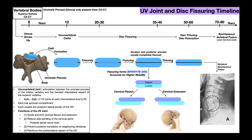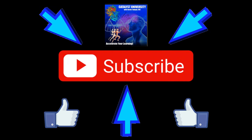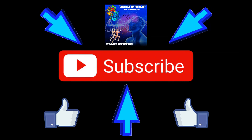In the next video, we're going to look at a timeline of UV joint development, and we'll see that UV joint development leads to fissuring of the cervical discs — which is actually not pathological. It's a normal thing that happens and leads to some cool biological effects unique to the cervical spine. Please make sure to like this video and subscribe for future videos and notifications. Thank you.